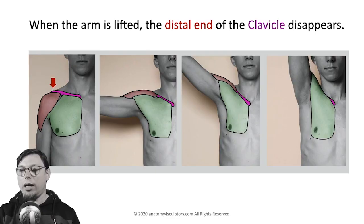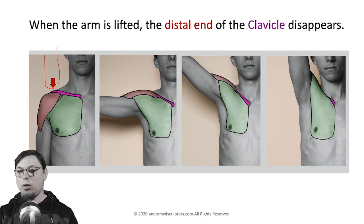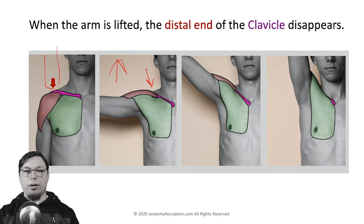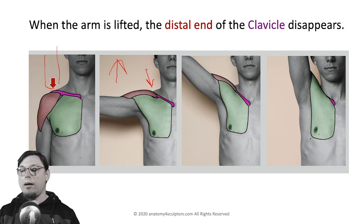Regarding the distal or acromial end of the clavicle — it is visible only when the arm is at rest. When you start lifting your arm, the acromial end of the clavicle disappears, because the whole scapuloclavicular joint turns to the backside and becomes visible only from behind. We will cover this further when discussing the deltoid muscle.